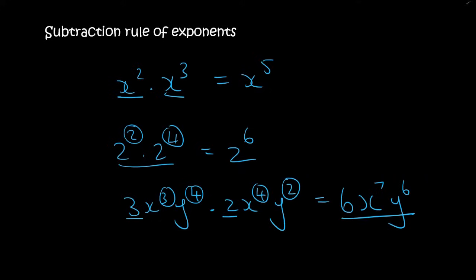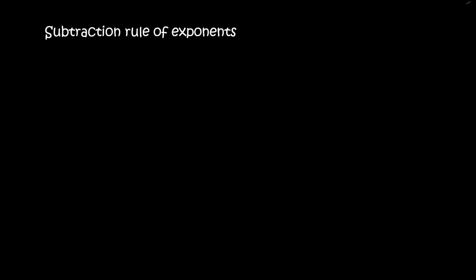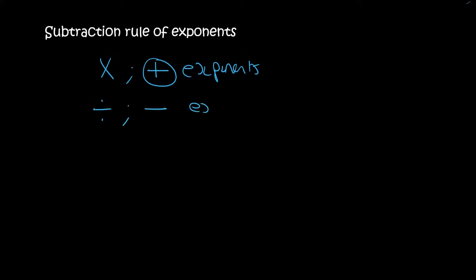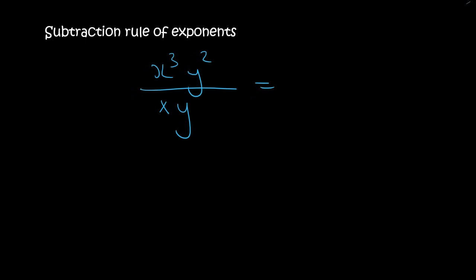Now we're going to look at the subtraction rule for exponents. This will obviously be the opposite to addition. With the addition rule, when we multiplied the bases we added the exponents. So now when we divide the bases we will subtract the exponents. For example, here we have a division sum — these two x's are the same, so we subtract their exponents, and it will always be the top one minus the bottom one.